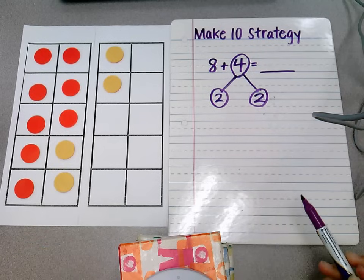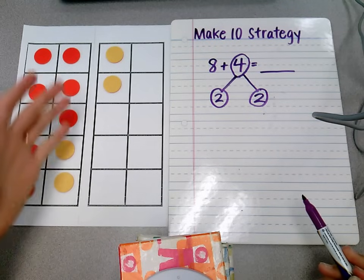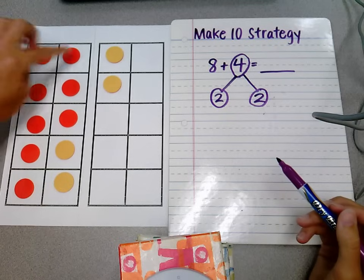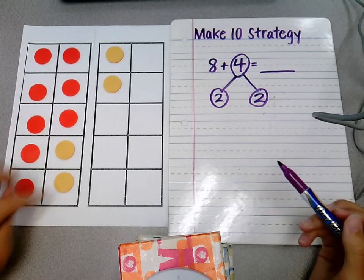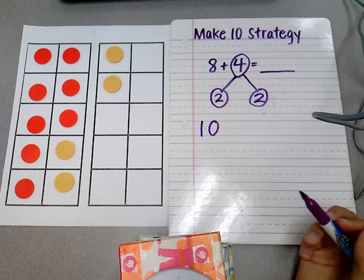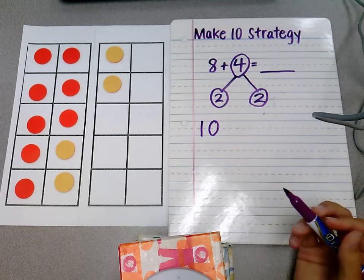Now I look at the kids and I say, okay, we used our 2 to make this into a complete 10 frame. Because 8 right here plus the 2 equals 10. There, we made 10. That's the purpose of the strategy to make 10.